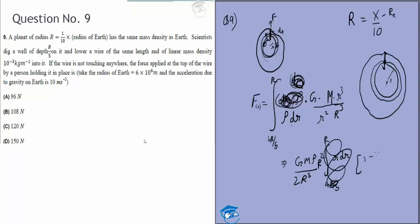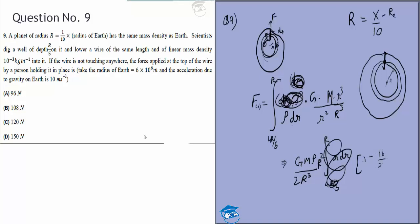This equals the total F. GMρ by R cubed, integral of r dr from 4r/5 to r, which gives 1 minus 16/25 = 9/25. So F equals 9GMρr/50.